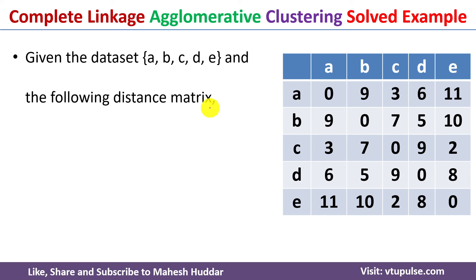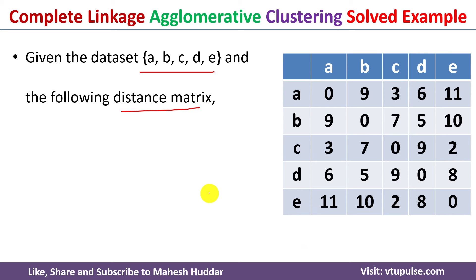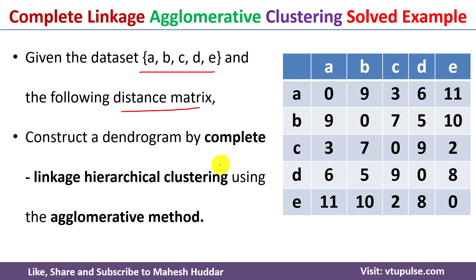In this case we have been given a dataset with five data points: A, B, C, D, and E. The distance matrix is also given to us, meaning the distance between each pair of data points is given — from A to all other data points, B to all other data points, and so on. Given this distance matrix, we need to apply the complete linkage hierarchical clustering algorithm, divide these data points into different clusters, and draw the dendrogram.